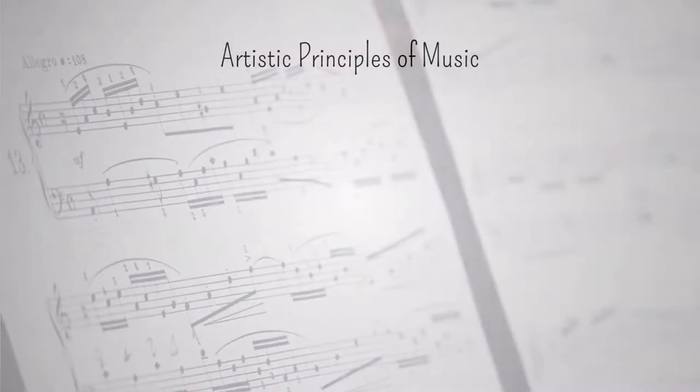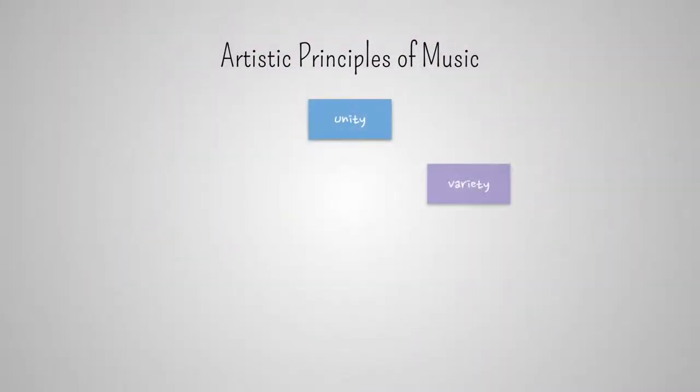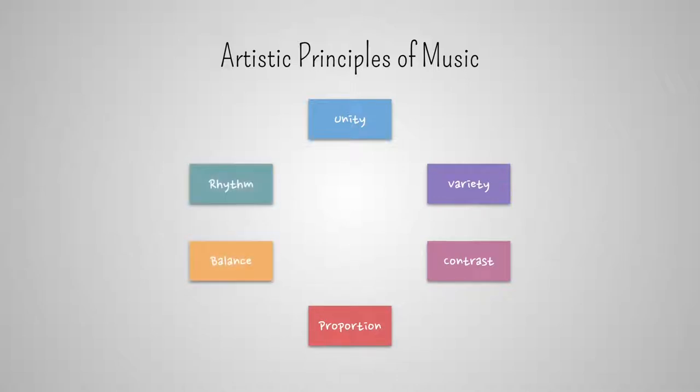We can define six basic principles: Unity, variety, contrast, proportion, balance, and rhythm. I'll explain each of them using examples from the visual arts, and then move on to musical examples.